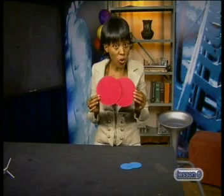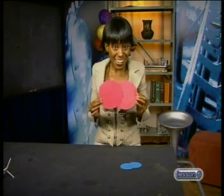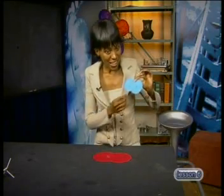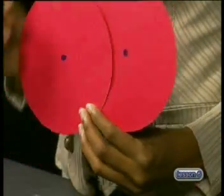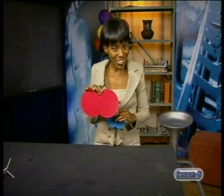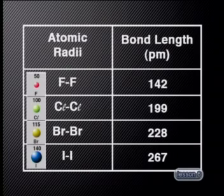Using cardboard circles to represent atoms of different sizes: two small circles overlapping represent a small molecule like fluorine, and two larger circles overlapping represent a larger molecule like iodine. The distance between the centres of the smaller circles is much less than the distance between the centres of the larger circles. This model predicts that the larger the atomic radius, the larger the bond length. Checking the X-ray bond length measurements confirms this — the size of the atom does affect the bond length. The larger the atom, the longer the bond.